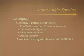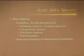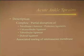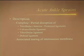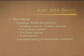Ankle sprains involve complete or partial disruption of one of several ligaments: the deltoid ligament, the tibiofibular ligament, the talofibular ligament — either the anterior or posterior — or the calcaneofibular ligament. There may also be associated tearing of the interosseous membrane.